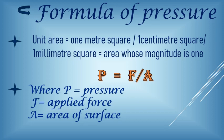How do we obtain pressure? We divide the thrust or the force by the area. Therefore, the formula of pressure is force upon area, or thrust upon area. So, P equals F upon A, where P is the pressure, F is the applied force or the thrust, and A is the area of the surface on which the thrust is acting.